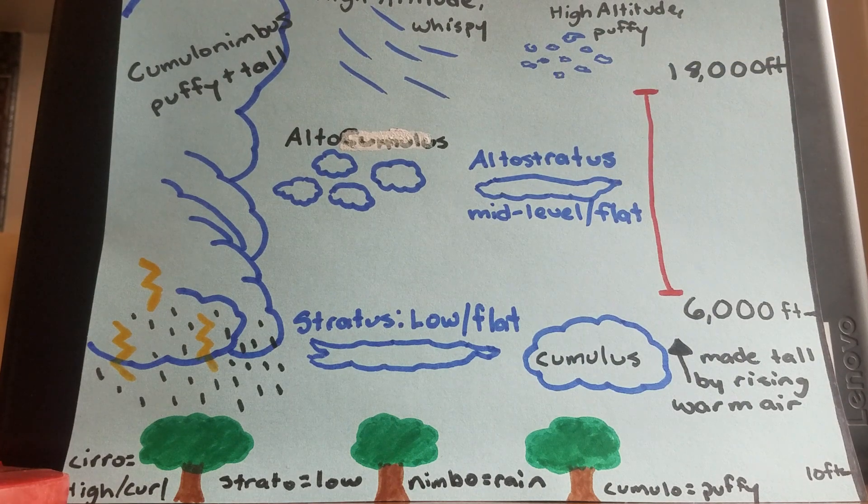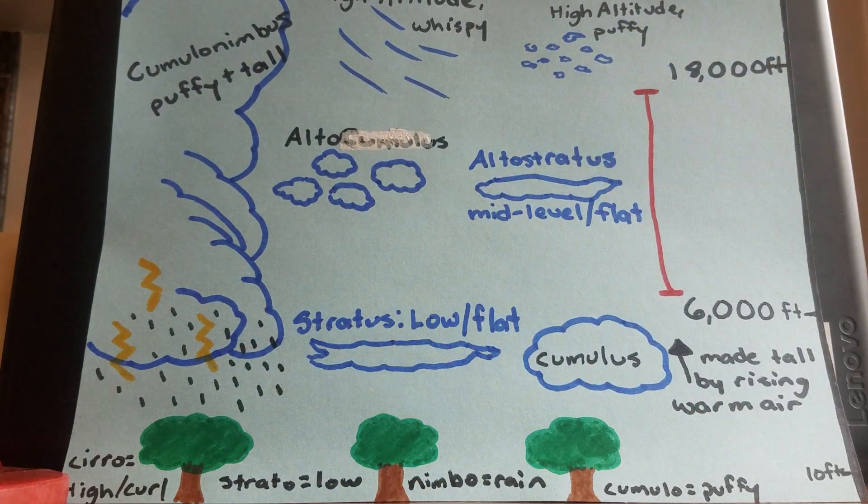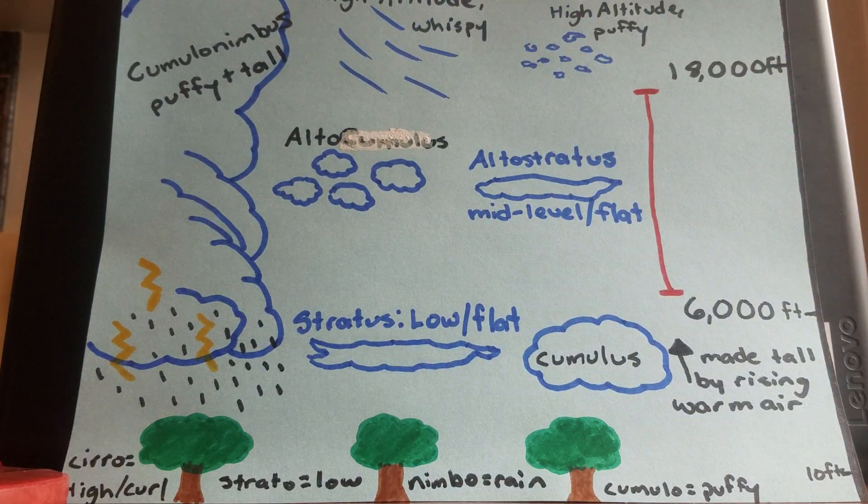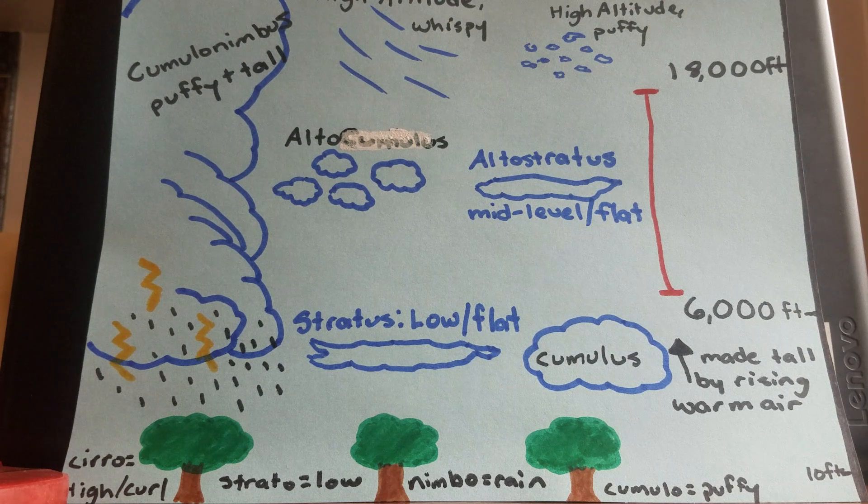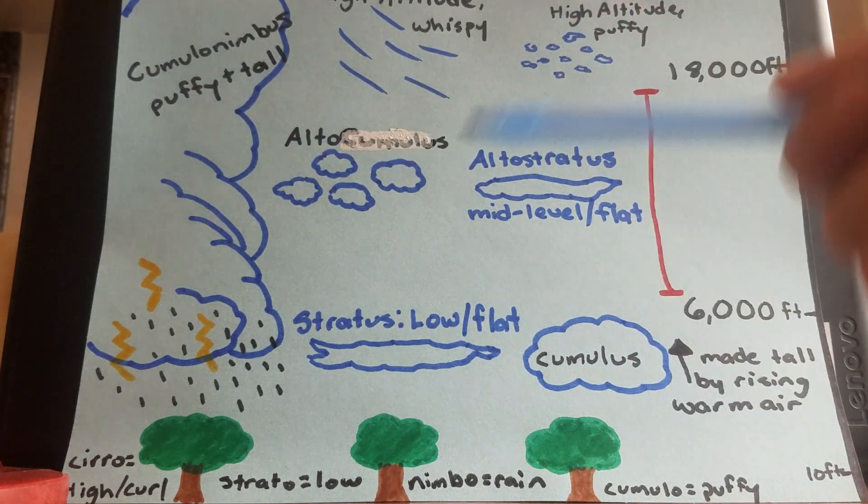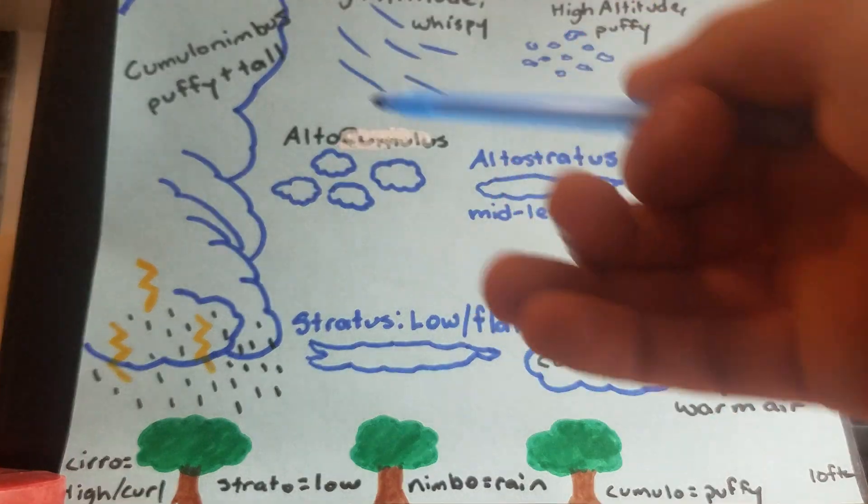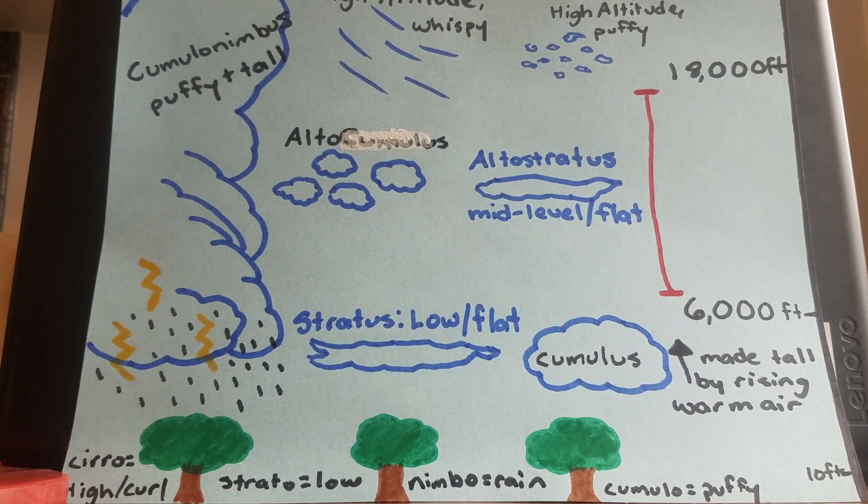Now you also have nimbus clouds. Remember what I said about nimbus? This is always rain bearing. So every single one of these clouds have some kind of nimbus variant. So you have cumulonimbus, stratocumulus, altonimbus. This just means that it's that variation of that cloud, except it's rain bearing.